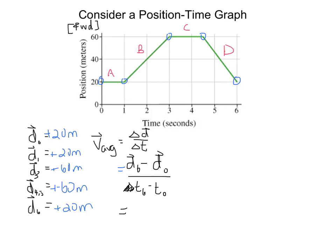So we have here positive 20 meters minus positive 20 meters. And that's all over 6 seconds minus 0 seconds.